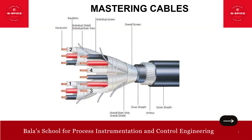Mastering cables — in this session we'll focus on the type of material used, for example thermoplastic and thermoset, and what is the meaning of both thermoplastic and thermoset, and what are all the characteristics in terms of high temperature, coefficient of friction, elongation, tensile strength, colorability, heat deformation, and cold temperature compatibility — all these we are going to talk about.